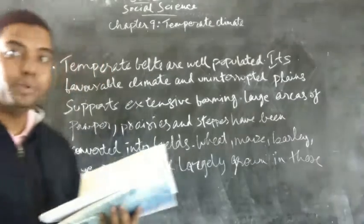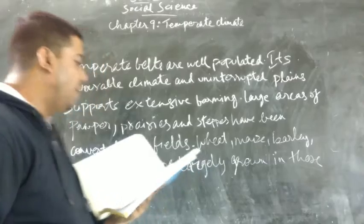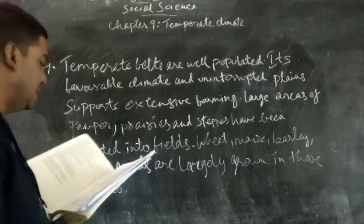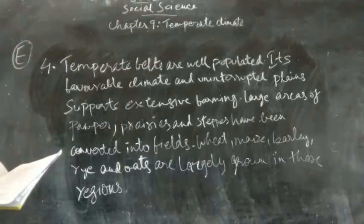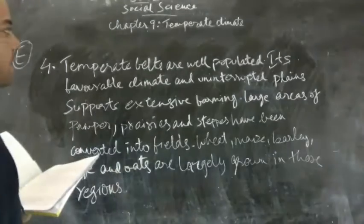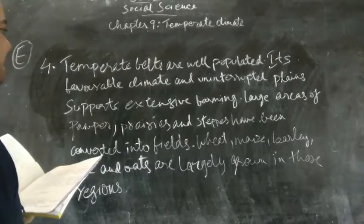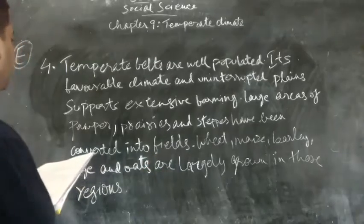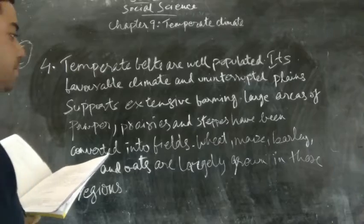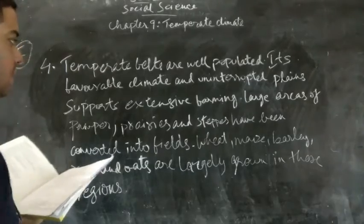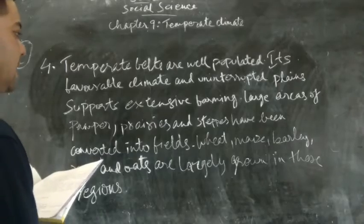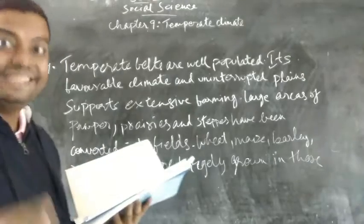Question number 4: Why is extensive farming carried out in the temperate grasslands? Temperate grasslands are well-populated. Their favorable climate and uninterrupted plains support extensive farming. Large areas of pampas, prairies and seas have been converted into fields. Wheat, maize, barley, rye and oats are largely grown in these regions.